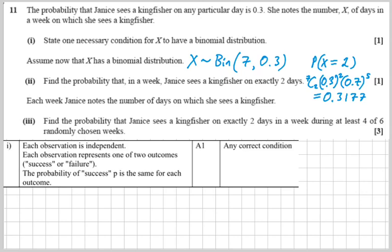But it's not as hard as it sounds, because you can notice that that underlined statement there, that phrase, Janice sees a kingfisher on exactly two days in a week, is exactly the thing that we've just worked out in part two.